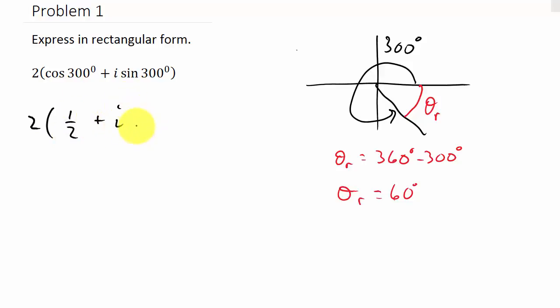Plus i times, now the sine of 300. Well, what's the sine of 60? It's square root of 3 over 2. Square root of 3 over 2. Well, which quadrant am I in? Fourth. So that means it's negative.